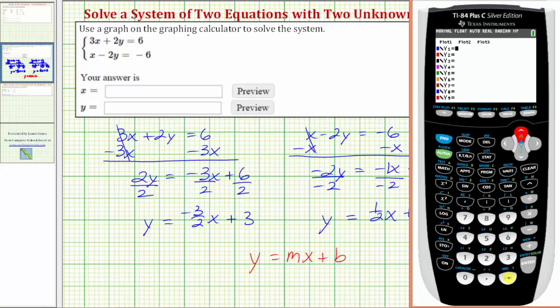So in y1, we'll enter -3/2 x, so -3 divided by 2 x plus 3. Enter. And y2 will enter 1/2 x plus 3, so 1 divided by 2 x plus 3.